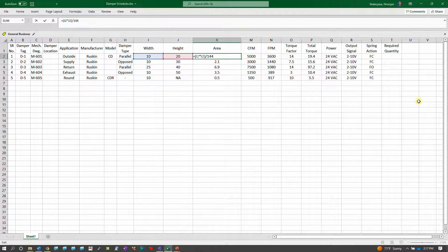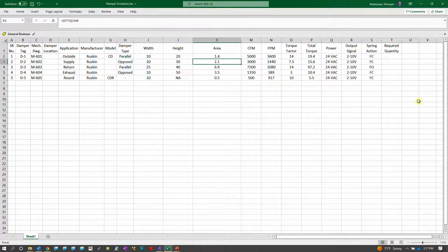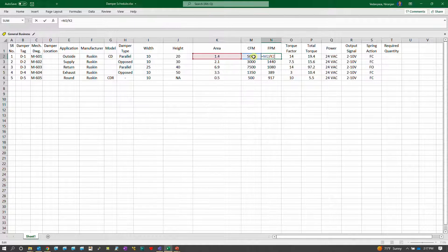You can see the calculation of these two dimensions getting multiplied and divided by 144 give me in feet square. I have the CFM, I've calculated the FPM as well by dividing the CFM by area which gives me the FPM.